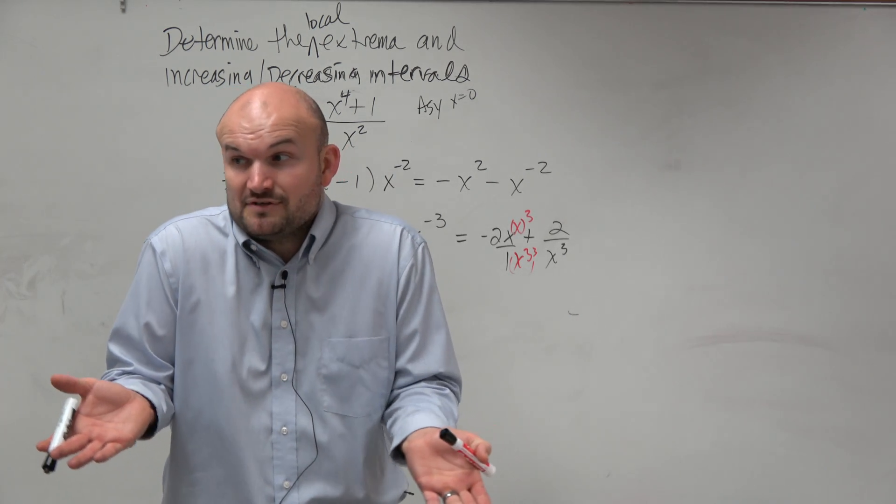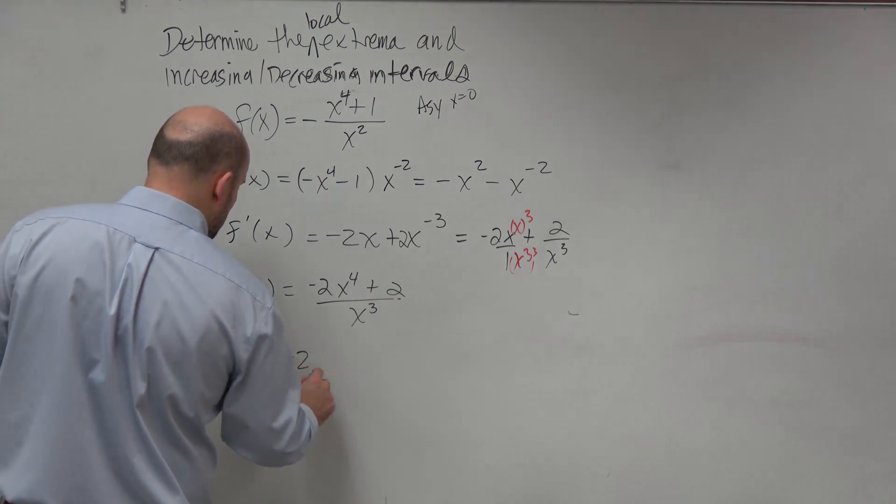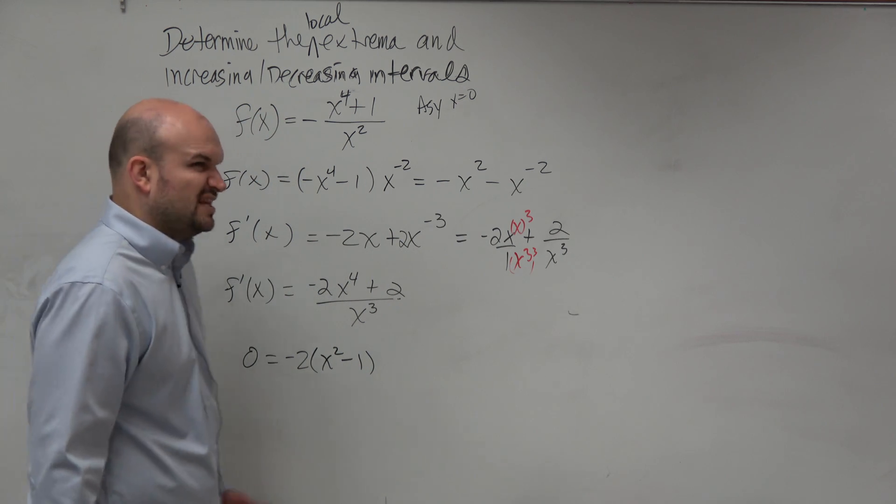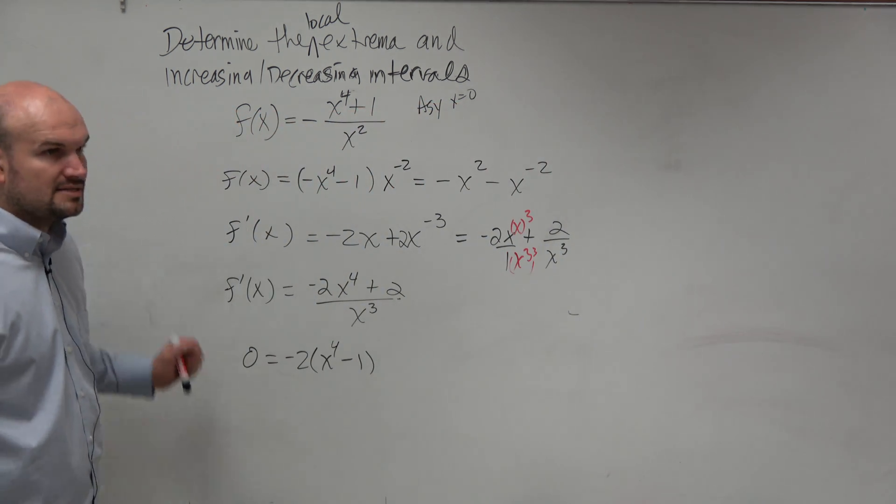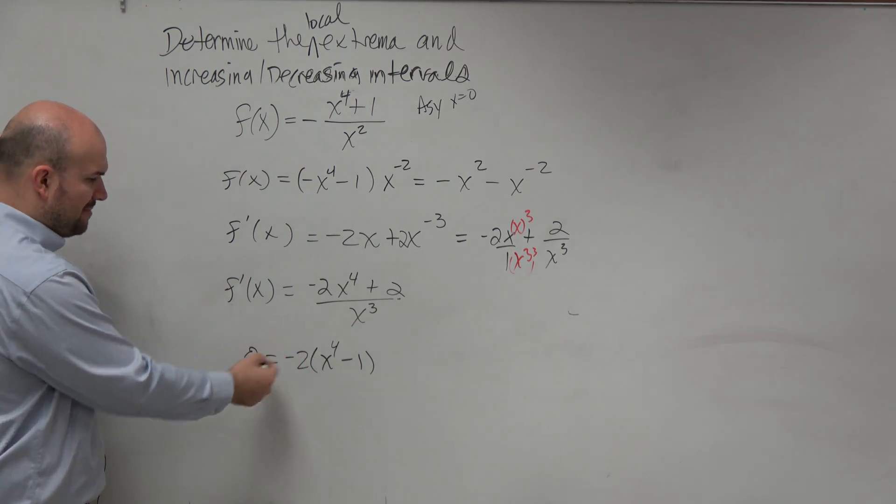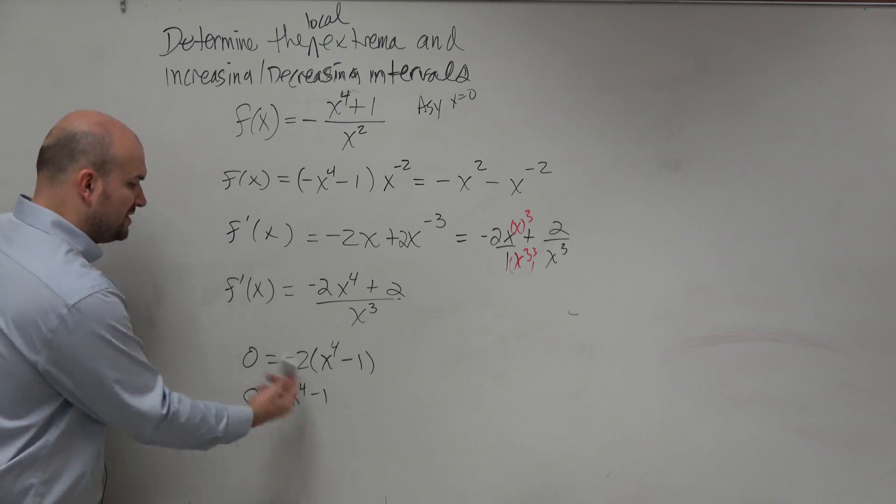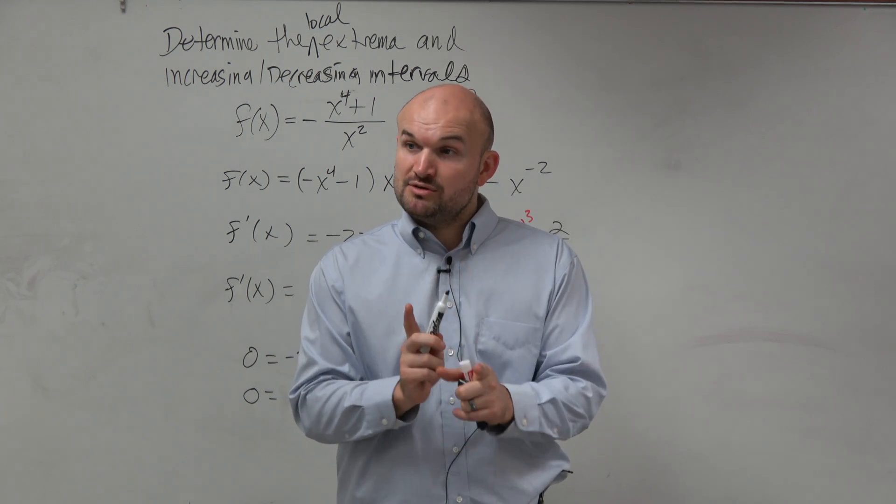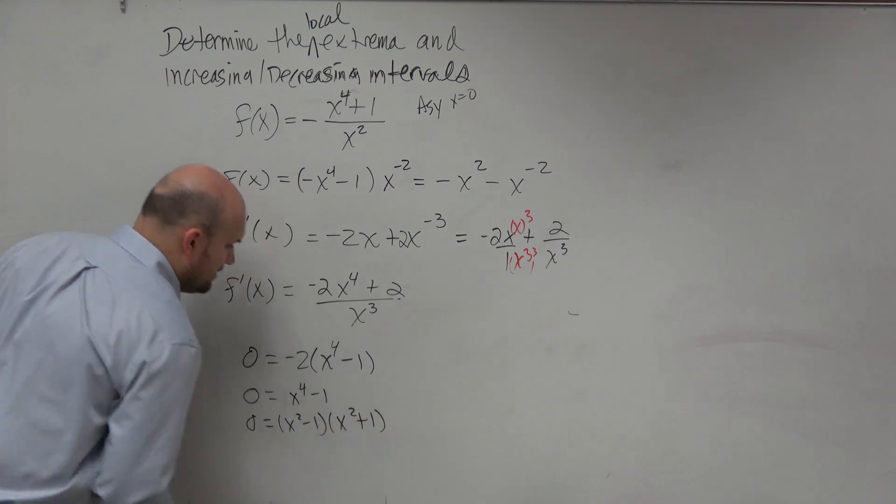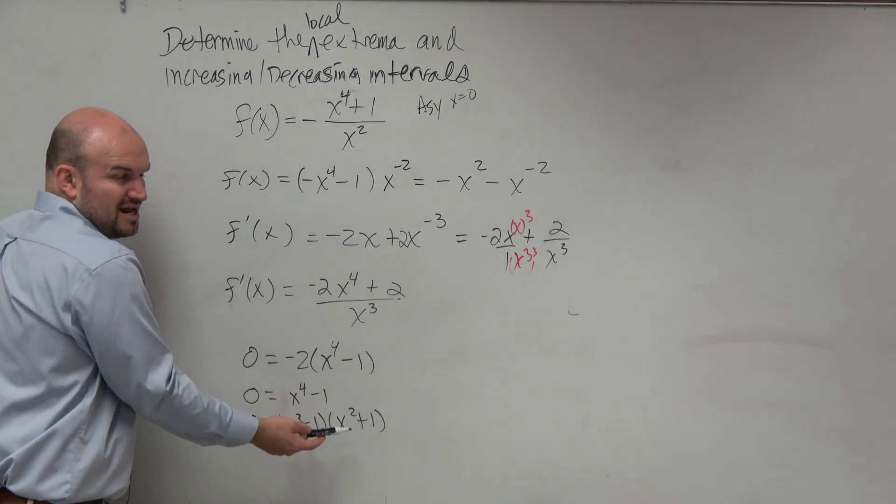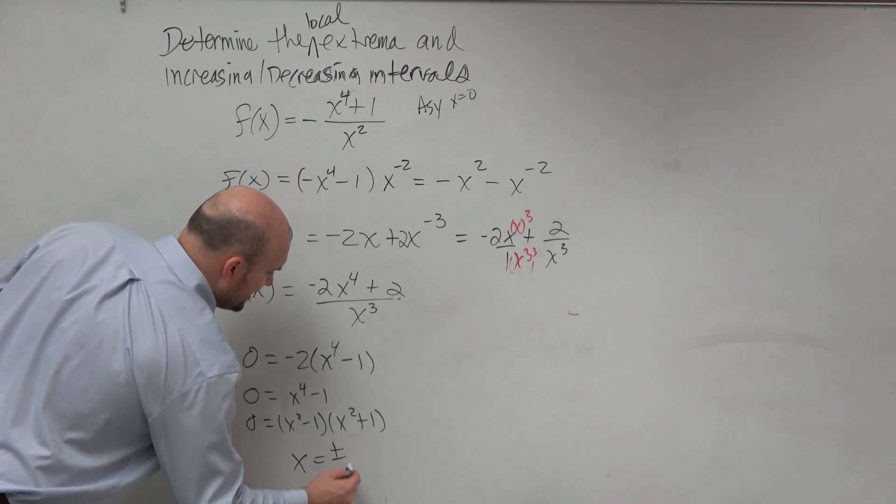But it is still a critical value. So we still have to use testing intervals on it. If I want to set this equal to 0, you guys would agree with me that I could just factor out a 2 and just set the numerator equal to 0. You could factor using difference of two squares, x squared minus 1 times x squared plus 1. x squared plus 1 is going to give you two complex zeros. So we're only going to really test x squared minus 1 equal to 0, which is still just going to give us x equals plus or minus 1.